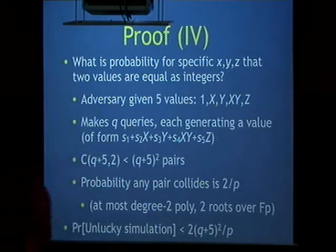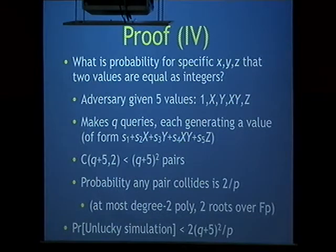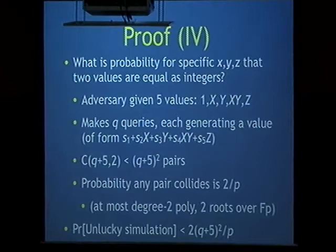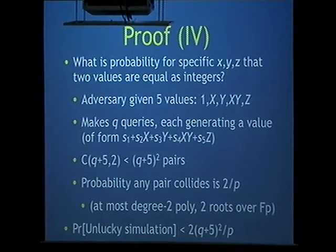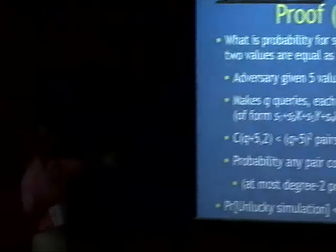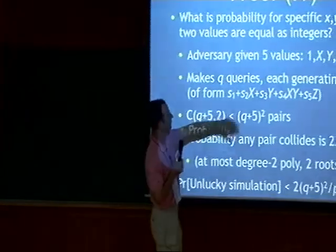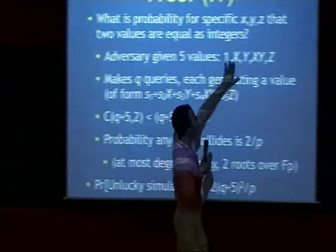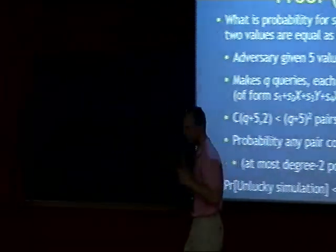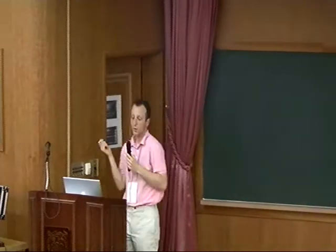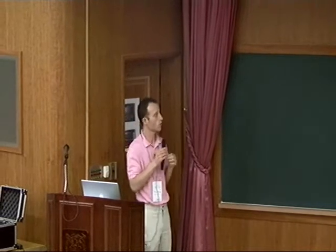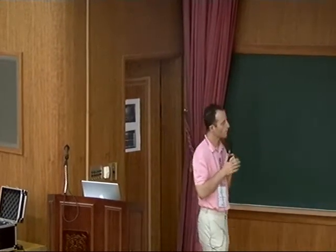He makes two queries, each generating a value that is a linear combination of the starting values, since he has no way to generate anything else. Each of these is a polynomial of degree at most two — degree one everywhere except the XY term, which is degree two. If two of these polynomials are equal when we plug in X, Y, Z as actual values, then we've found a root of the polynomial that is their difference — for example, X minus Z, a degree-one polynomial.